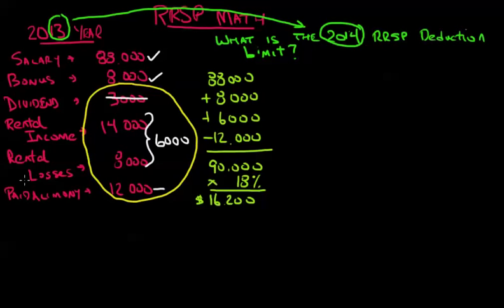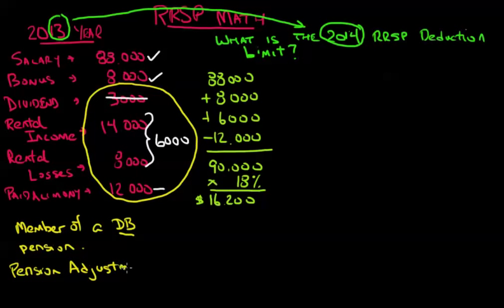Now you might have another scenario at play here, another bit of information available. We might also be told that this person is a member of a defined benefit pension. At some levels, at the CFP and mutual funds exam levels for example, you do have to know the formula for a DB pension. At the LLQP level you don't need to know it, you just need to recognize what happens when you have what's called a pension adjustment.